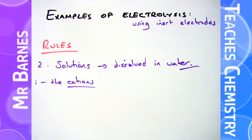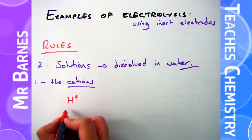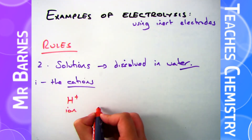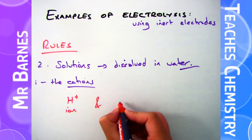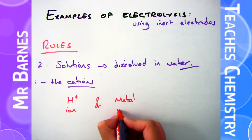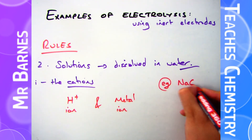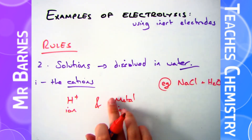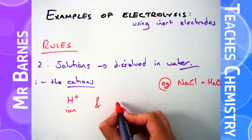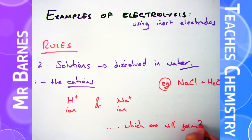If you have a solution dissolved in water it's slightly more complicated. You don't just have the metal and non-metal ions - you also have H+ and OH- ions. So for the cation, for example if you had sodium chloride, you'll have an H+ ion and you'll also have an Na+ ion in there, and what you have to be able to do is figure out what is produced.